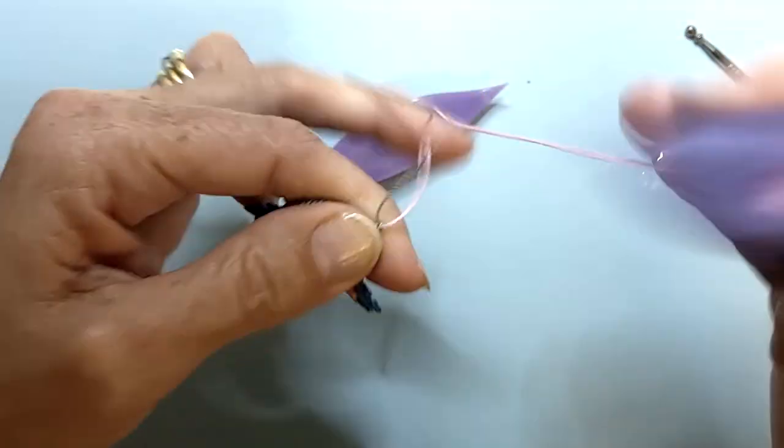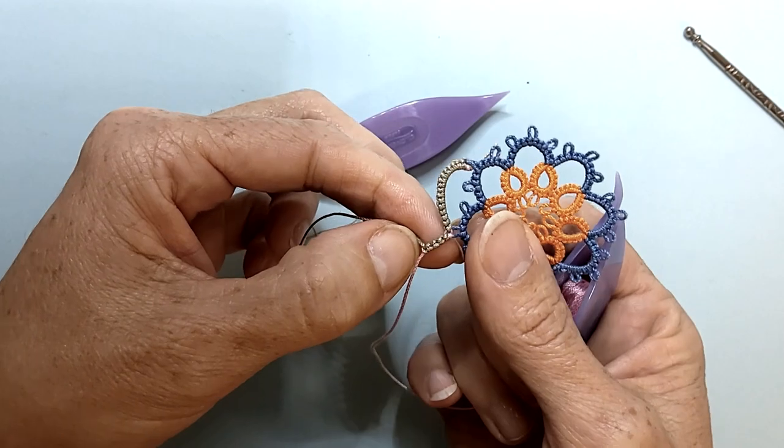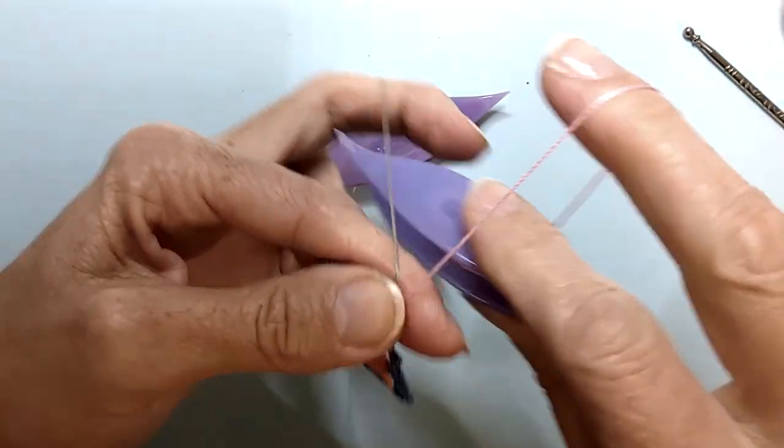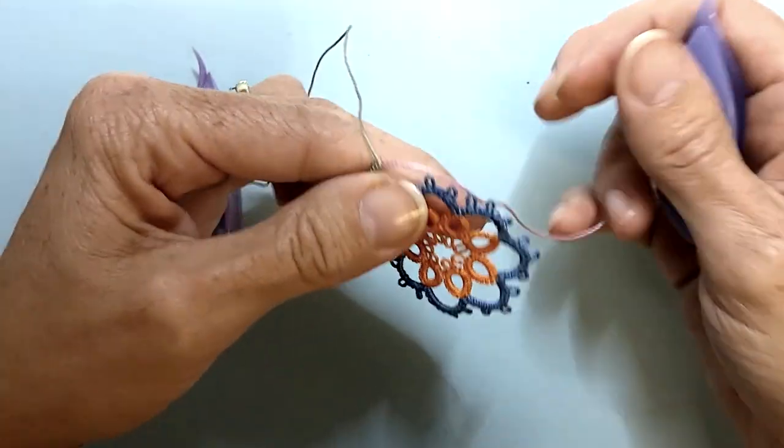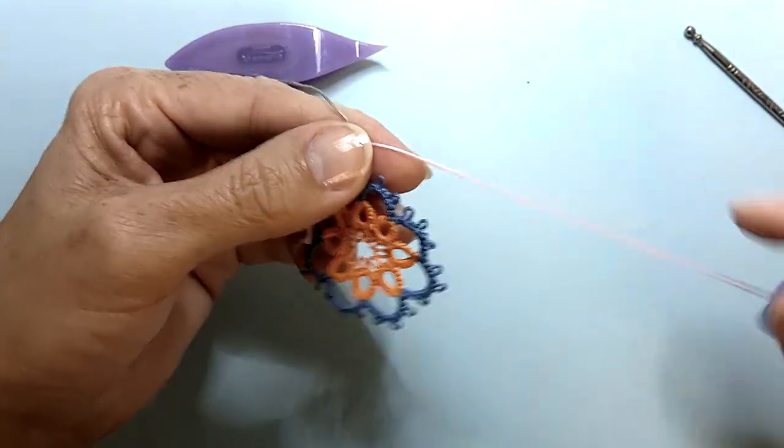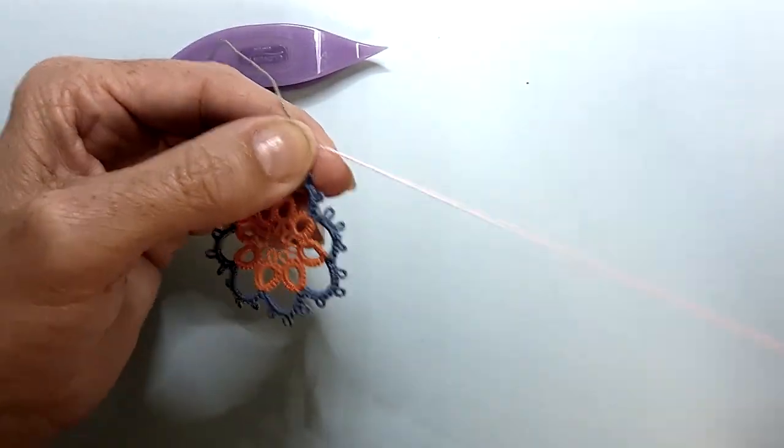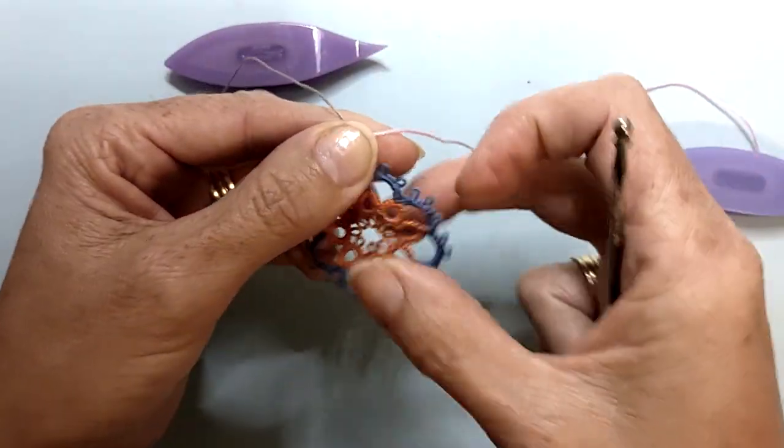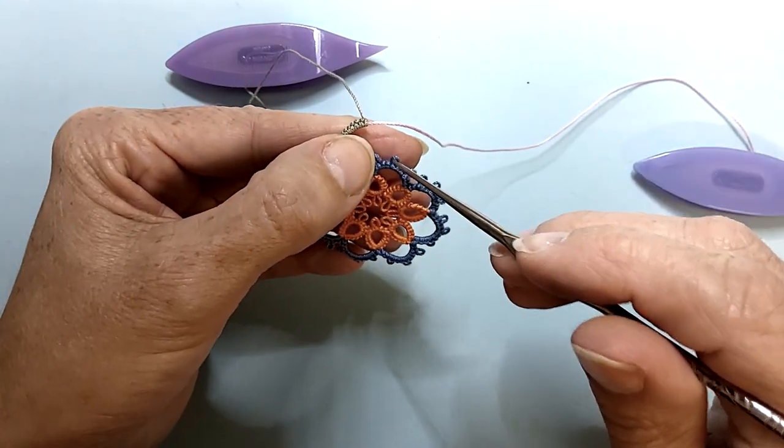To make a split chain, work the first half of the chain as normal. Leave a bare thread space about three quarters of the length of the remaining chain and lock join to the next element.